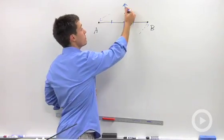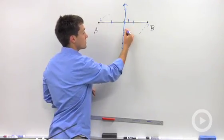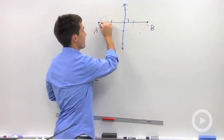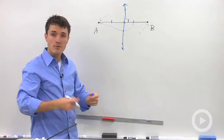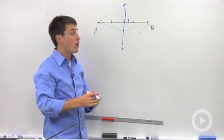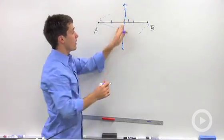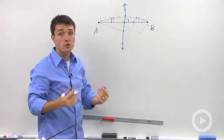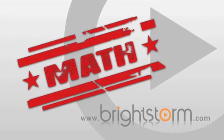So notice that if you picked any point along this perpendicular, it will be the same distance from the two endpoints. So that's kind of a definition of a perpendicular bisector. It's the collection of all the points that are the same distance from the two endpoints of a line segment.